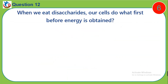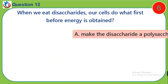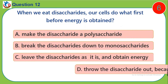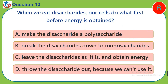Question 12. When we eat disaccharides, our cells do what first before energy is obtained? A. Make the disaccharide a polysaccharide. B. Break the disaccharides down to monosaccharides. C. Leave the disaccharides as it is and obtain energy. D. Throw the disaccharide out because we can't use it.